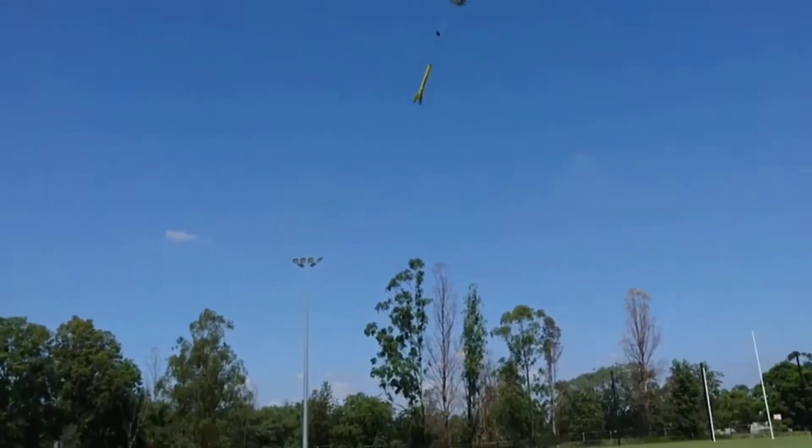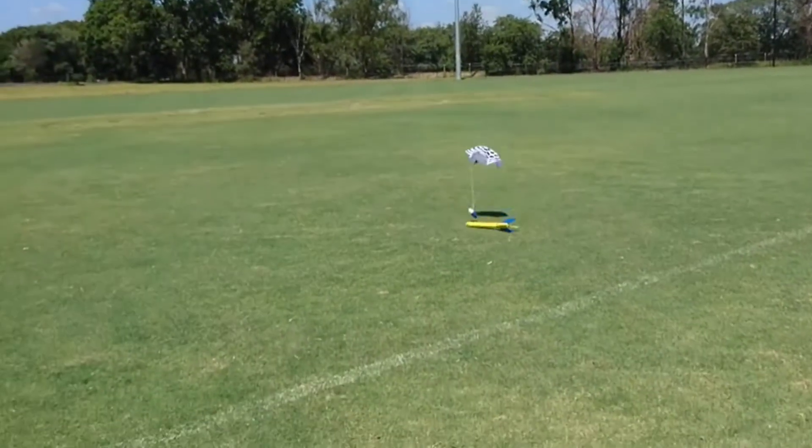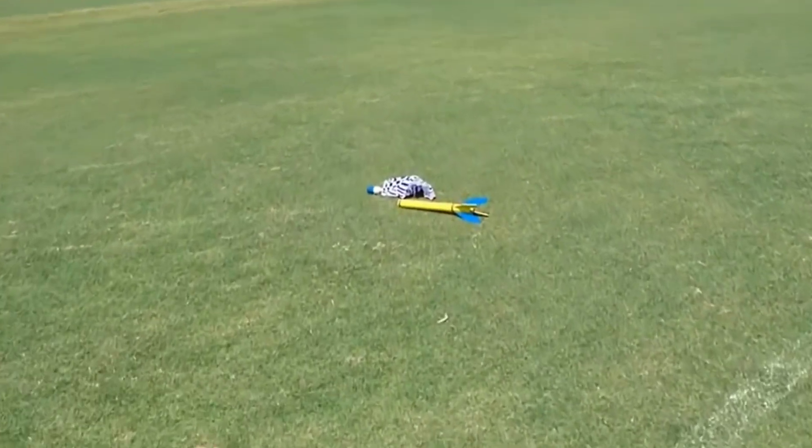The rocket continues its controlled descent, slowed by the parachute. And finally touches down on the ground. A perfect flight.